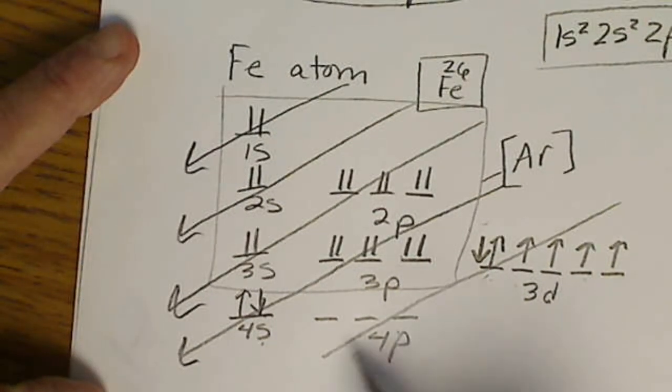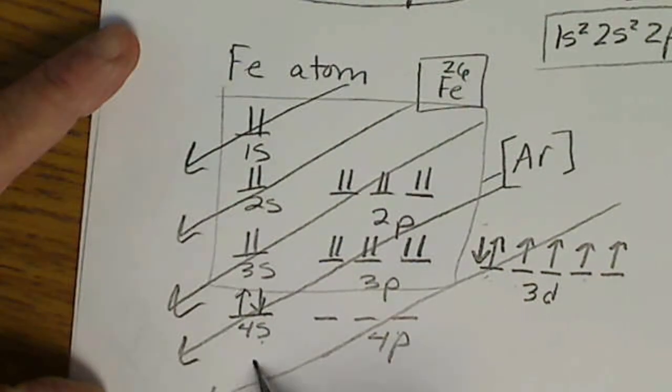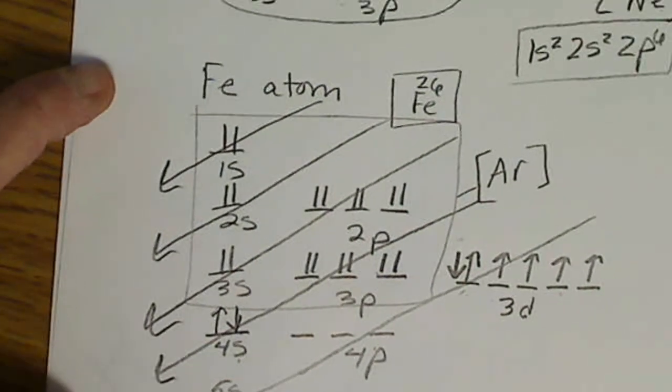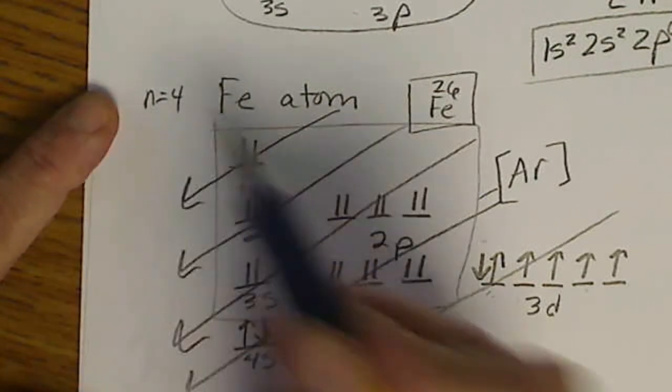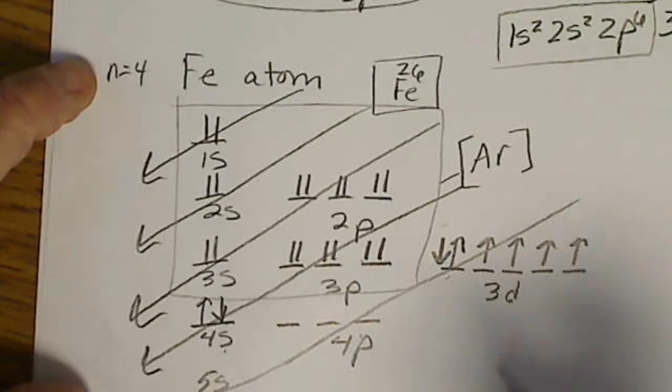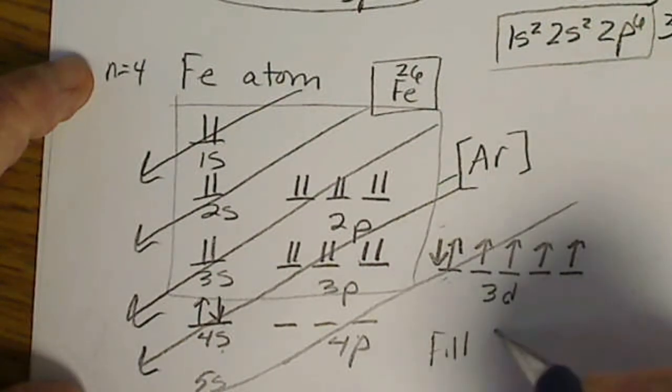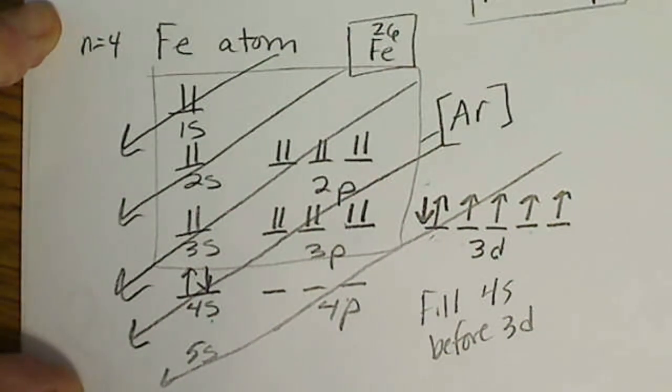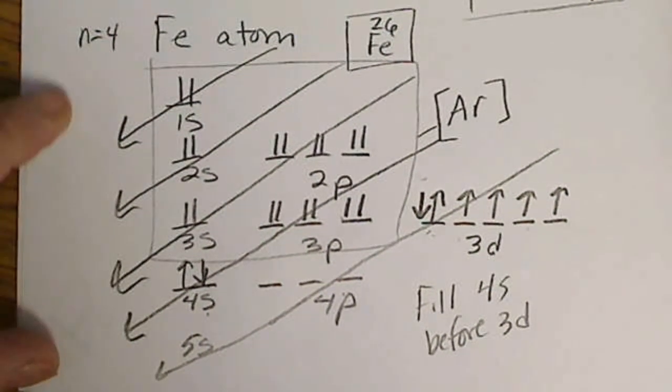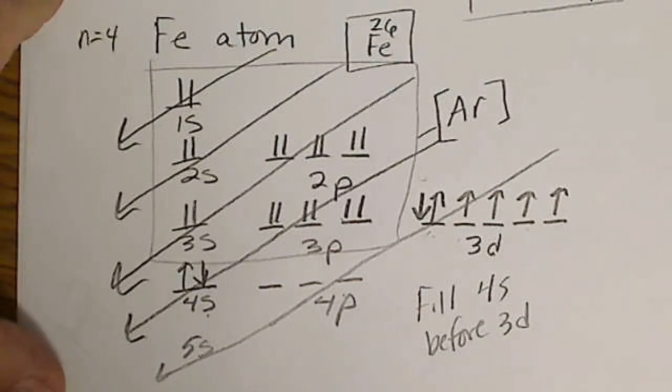If we had extra electrons, we'd fill the p, then 5s. On the fourth row of the periodic table, we have to remember that we fill the 4s before the 3d. According to the Aufbau principle, electrons will go in the lowest energy orbitals first.